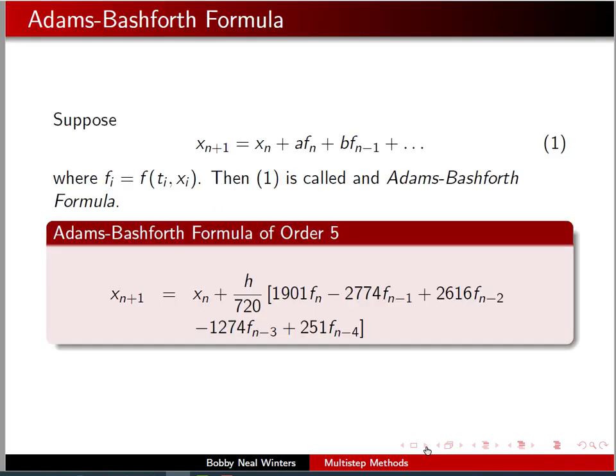Now, so this leads us on to what's called the Adams-Bashforth formula, where we're going to be having our xn plus 1 be equal to xn plus a times some f of n, f sub n, b times some f sub n minus 1, where f sub i is f evaluated at the pair of points t, i, x, i.